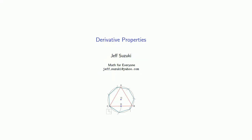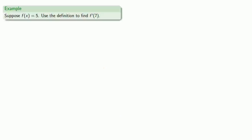As with limits, knowing a few properties of the derivative will help us to find many derivatives. Let's begin by finding a simple derivative. Suppose f is 5; we'll use the definition to find the derivative at 7.